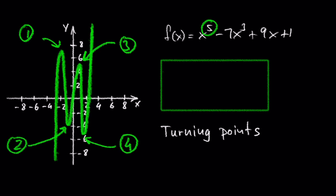Notice that the graph has four turning points. So that's one less than 5.